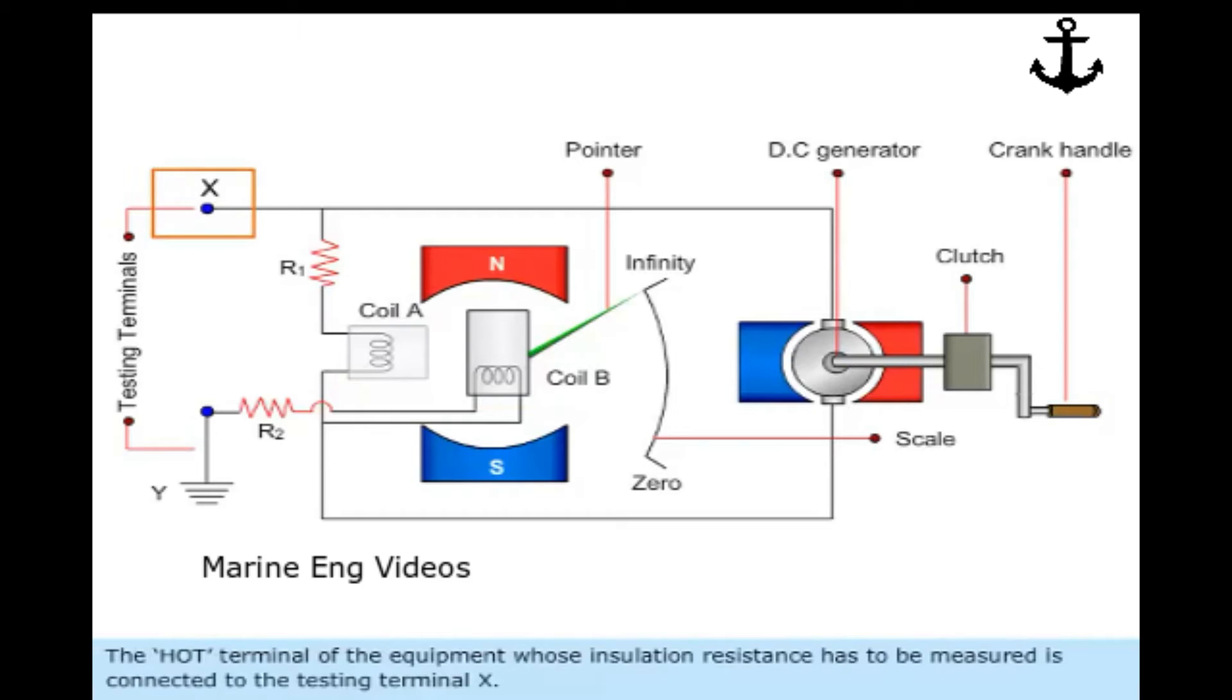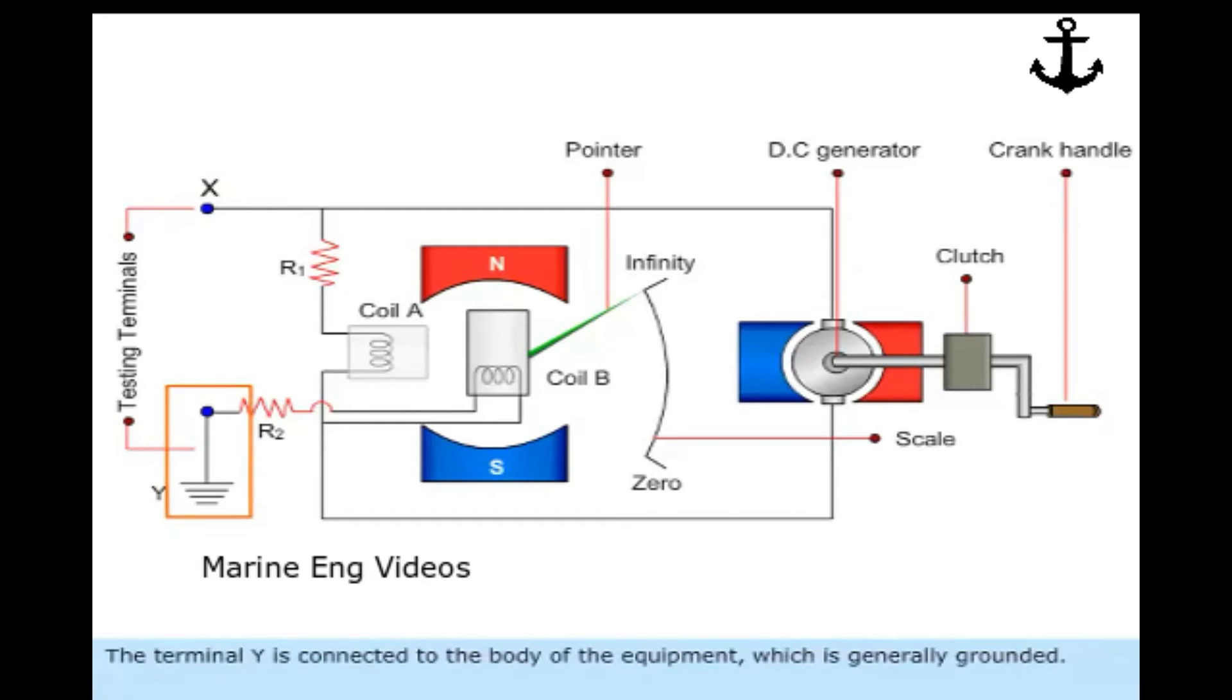The hot terminal of the equipment whose insulation resistance has to be measured is connected to the testing terminal X. The terminal Y is connected to the body of the equipment, which is generally grounded.